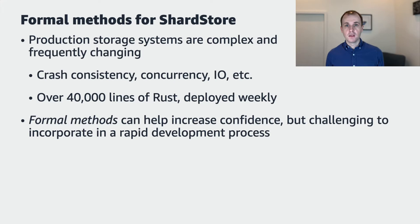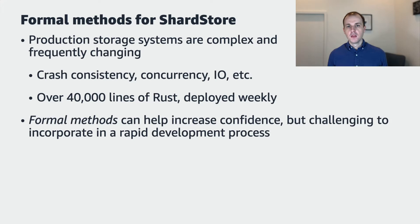But production quality storage software is notoriously difficult to get right. We need to combine ShardStore's soft updates based crash consistency protocol with high concurrency and optimizations to improve latency and throughput. This means that ShardStore's implementation is both complex and frequently changing. Today, it's over 40,000 lines of Rust code, and we deploy our changes worldwide every week.